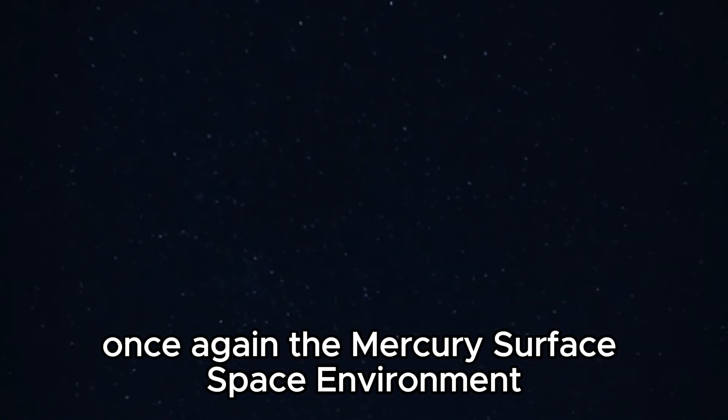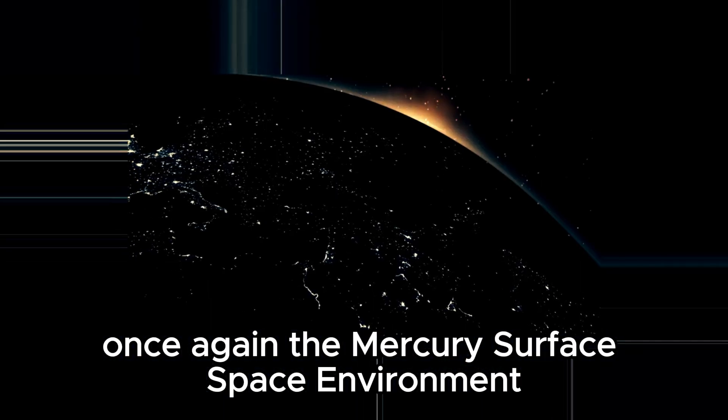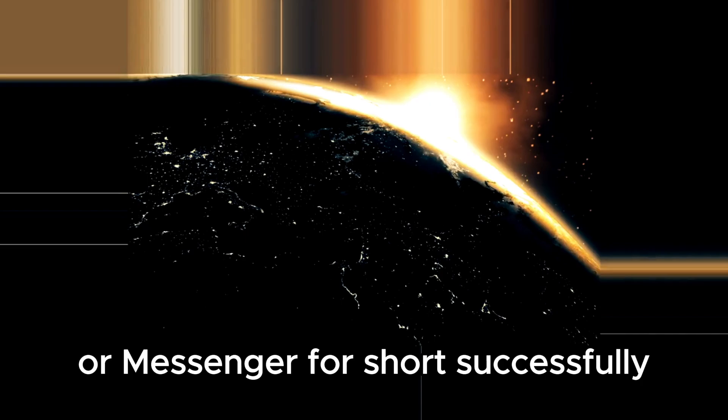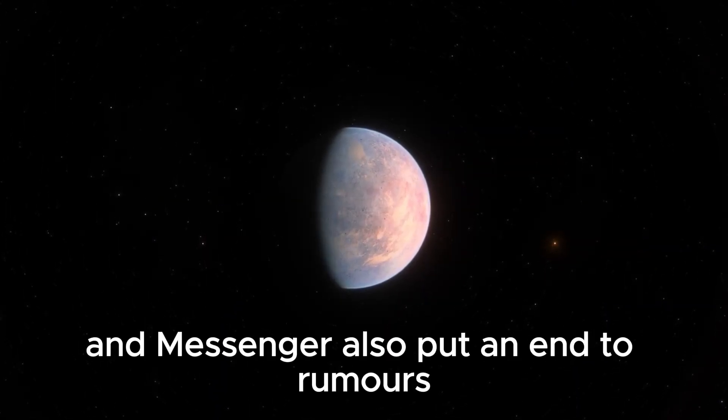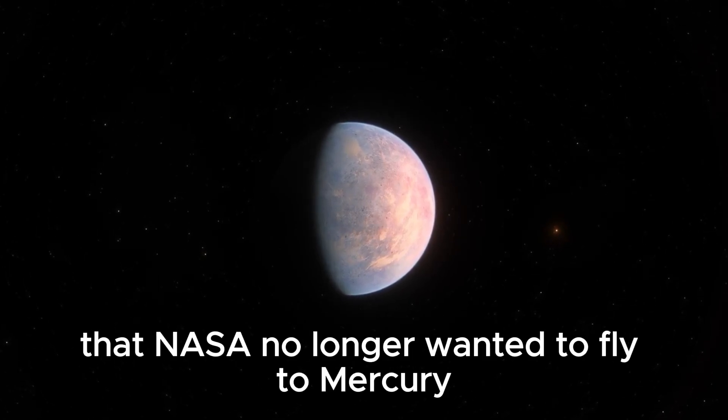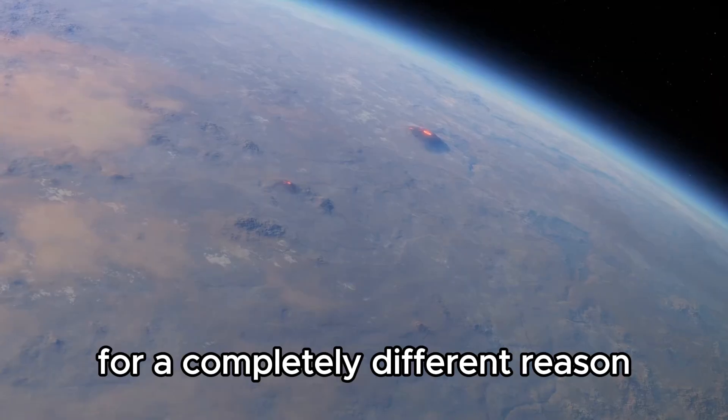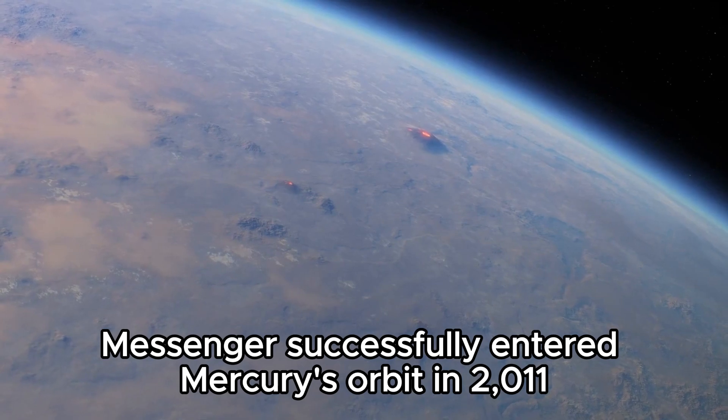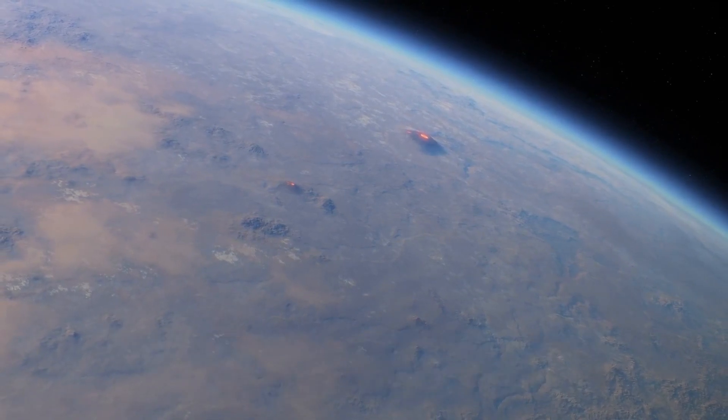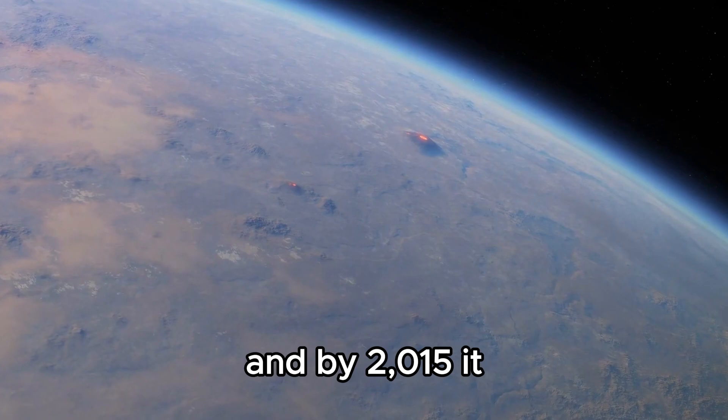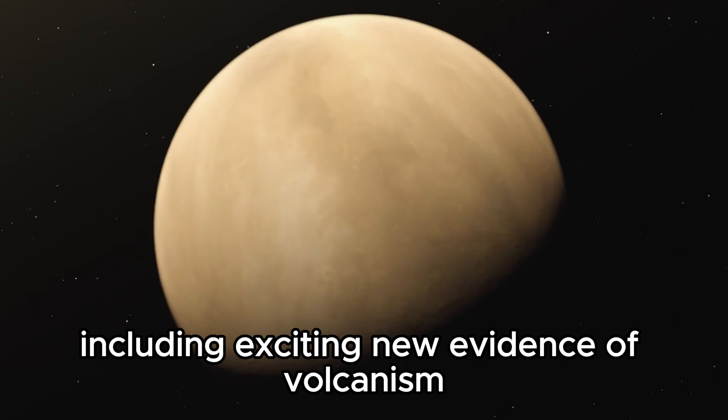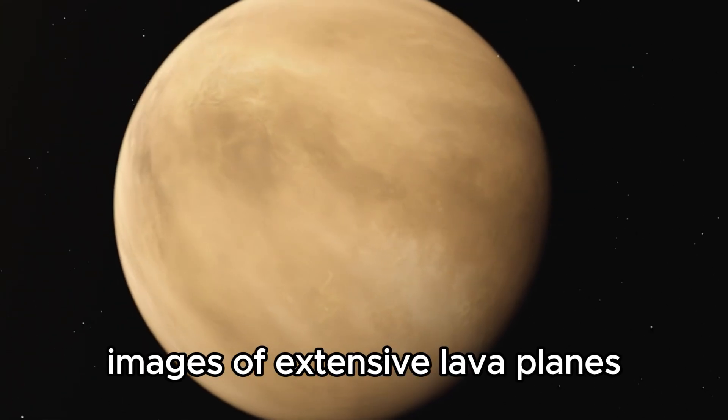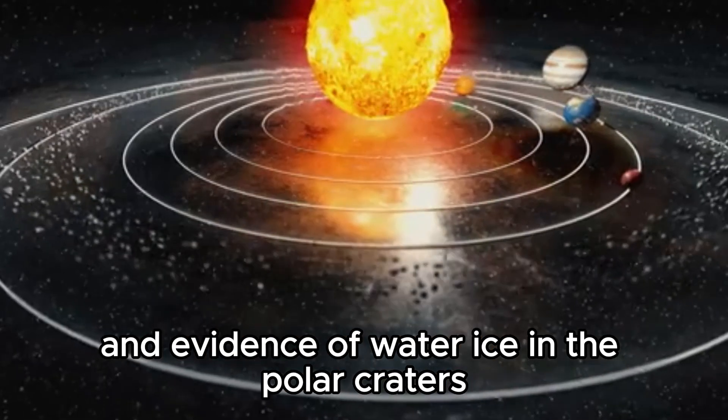It was not until 2008 that NASA embarked on the adventure once again. The Mercury Surface, Space Environment, Geochemistry, and Ranging Mission, or MESSENGER for short, successfully opened the next chapter in exploration. MESSENGER successfully entered Mercury's orbit in 2011, and by 2015 had provided new insights including evidence of volcanism, images of extensive lava plains, and evidence of water ice in the polar craters.